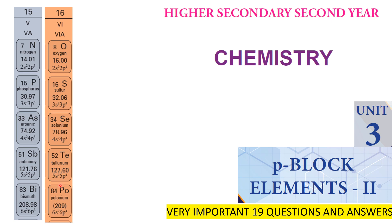16th group — oxygen group, also called chalcogens. The general electronic configuration is NS2 NP4. Oxygen: 2S2 2P4, Sulfur: 3S2 3P4, Selenium: 4S2 4P4, Tellurium: 5S2 5P4, Polonium: 6S2 6P4.